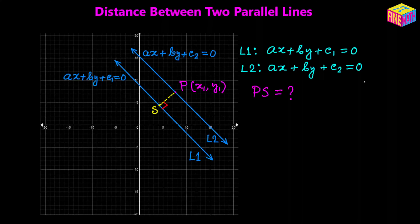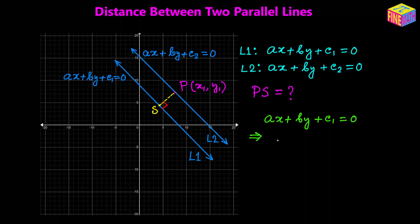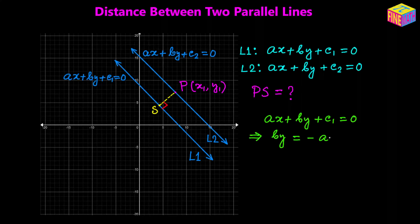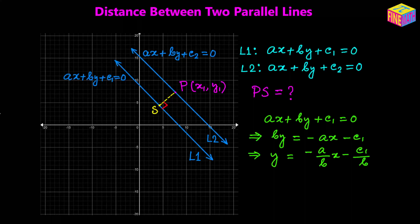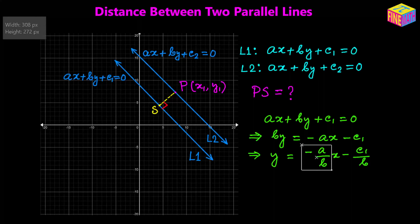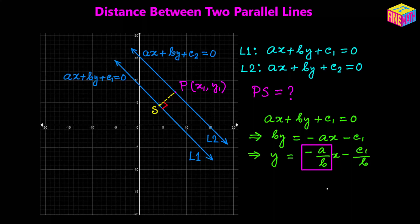Now is that a correct assumption? Let's check. For the first line we have ax + by + c₁ = 0, and if we convert it into y = mx + b form, then by = −ax − c₁, so y = −(a/b)x − c₁/b. The slope of this line is −a/b. Similarly, the slope of the second line should also be −a/b because they are parallel lines. Parallel lines have the same slope — that's one of the fundamental characteristics of parallel lines.